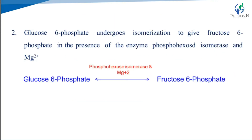In the next step, glucose-6-phosphate undergoes isomerization to give fructose-6-phosphate, in the presence of the enzyme phosphohexose isomerase and magnesium. Glucose and fructose are isomers.